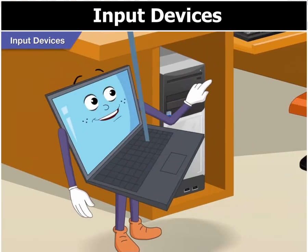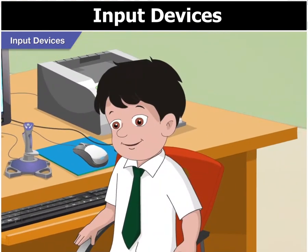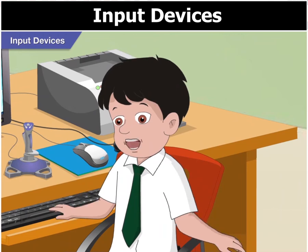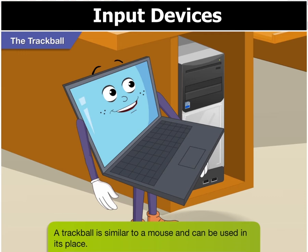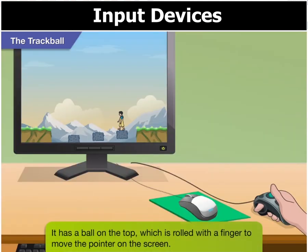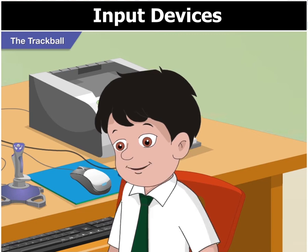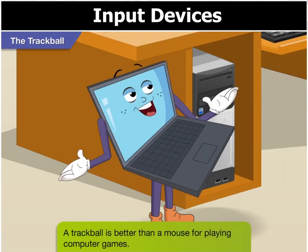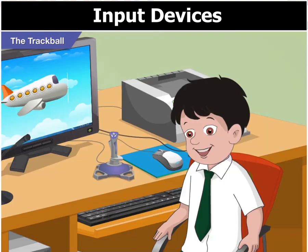Is that so Toggle? Now, look at this device. This is a trackball. Trackball! What is that used for? A trackball works in quite the same way as a mouse does. It has a ball on the top which is rolled with a finger to move the pointer on the screen. But Toggle, how is a trackball any better than a mouse? A trackball is better than a mouse for playing computer games. Got that Toggle!